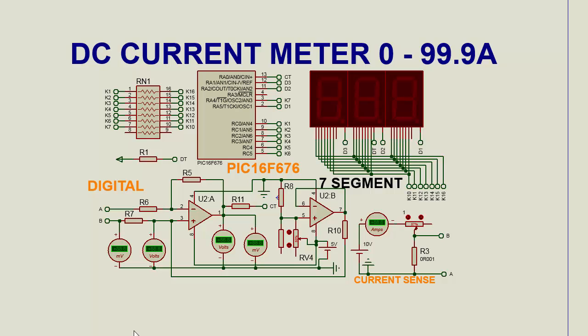Today I am going to show you a circuit, a digital circuit that can be used to measure DC current up to 100 ampere.